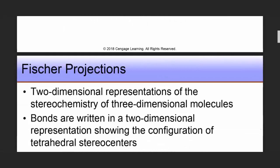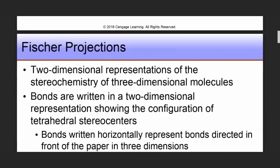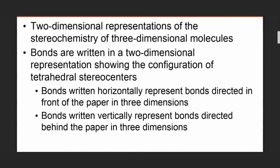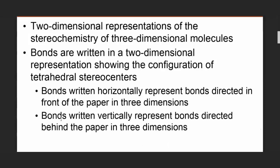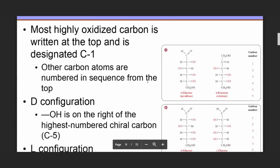Fischer projection refers to a two-dimensional representation of the stereochemistry of three-dimensional molecules, showing the configuration of tetrahedral stereocenters. Bonds written horizontally represent bonds directed in front of the paper, whereas bonds written vertically represent bonds directed behind the paper. This method is named after the German chemist Emil Fischer, who established the structures of many sugars.